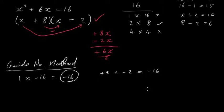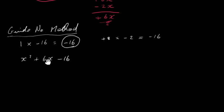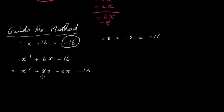Those two numbers are plus 8 and minus 2: plus times minus is minus, and 8 times 2 is 16, so their product is minus 16. We take the original expression x² + 6x − 16 and split the 6x into plus 8x and minus 2x. So plus 8x minus 2x is exactly the same as plus 6x, and this new expression is identical to the original.